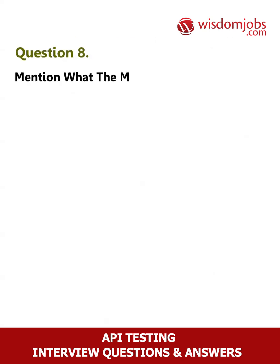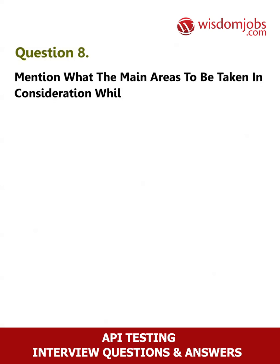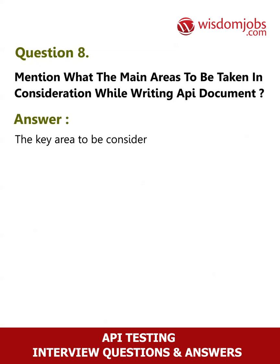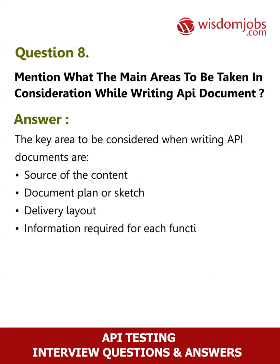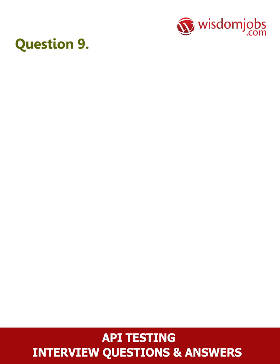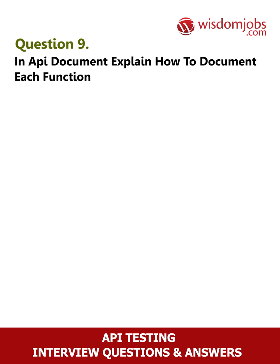Question 8: Mention the main areas to be taken into consideration while writing API documentation. Answer: The key areas to consider when writing API documents are: source of the content, document plan or sketch, delivery layout, information required for each function in the document, and automatic document creation programs.